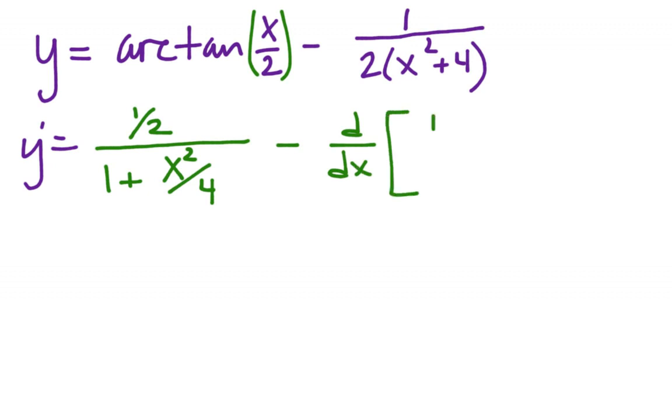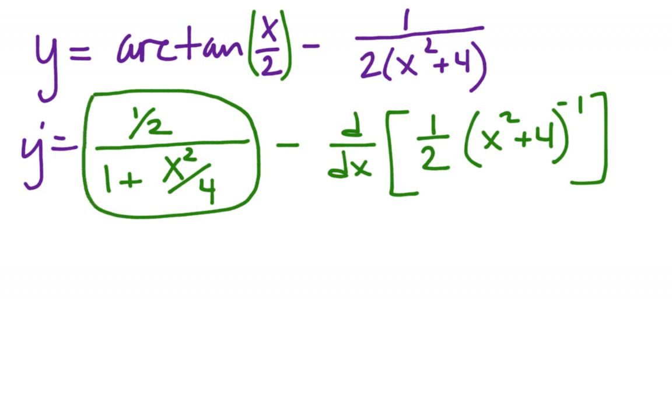All right, and I want to clean that up. I don't want complex fractions there. So what do I have in the denominator? I have 4 over 4. So I have 4 plus x squared over 4,